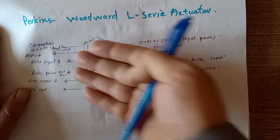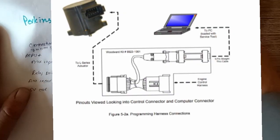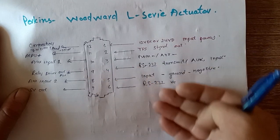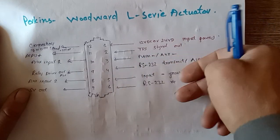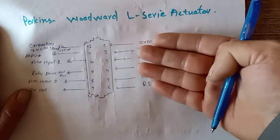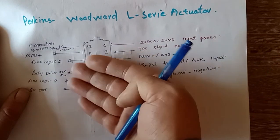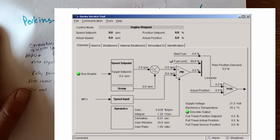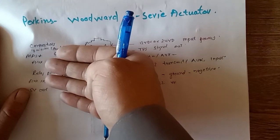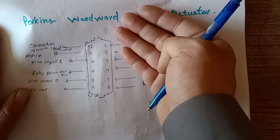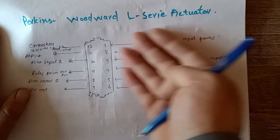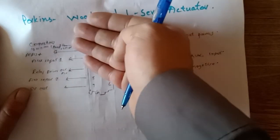This L series actuator, what is the software? The software is required to adjust and synchronize the engine RPM with this actuator. This actuator also frequency, RPM, and voltage gain, voltage drop, low idle running, generator running - all parameters you can set with the help of software.